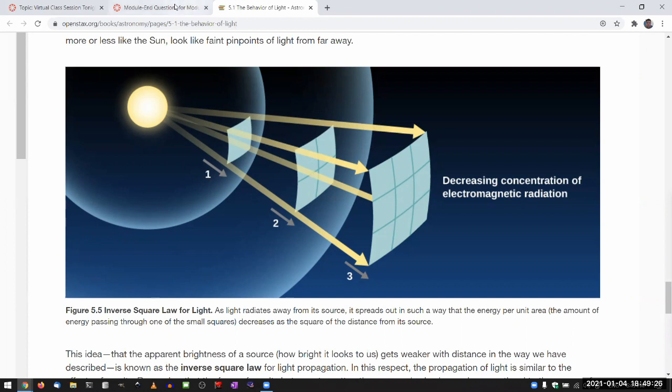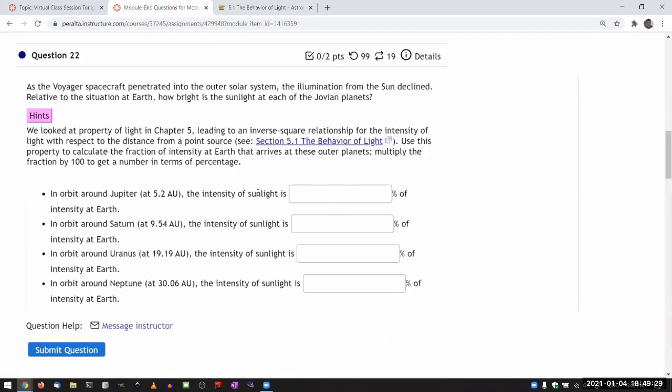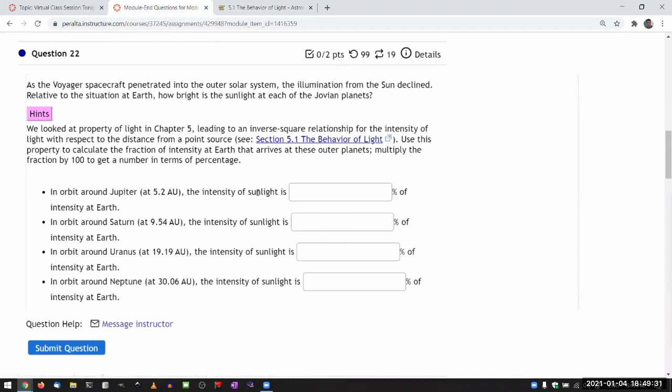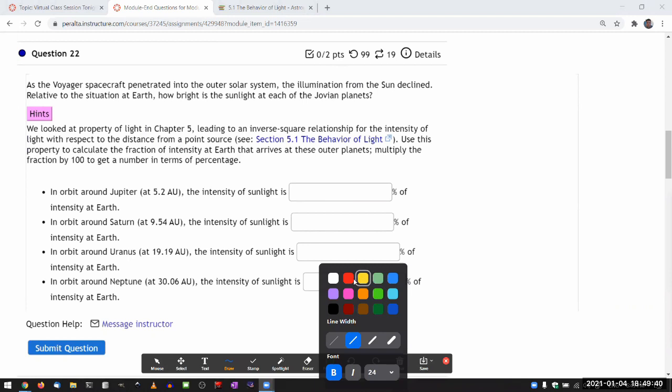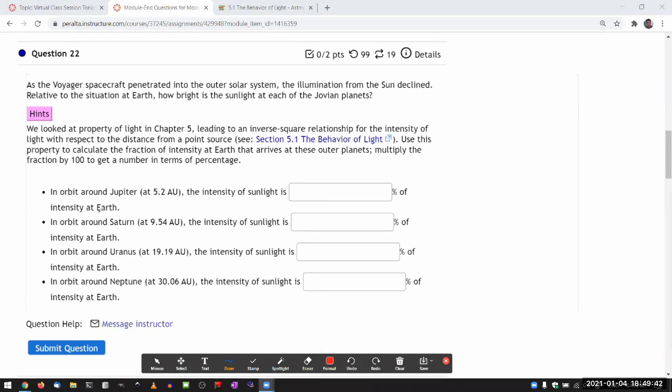So let me do the calculation for each of those distances given there. So it's useful to note that in all these cases, we are comparing it to Earth. We are all comparing it to Earth. And Earth is a useful measuring stick because the distance between Earth and Sun is given as one astronomical unit.